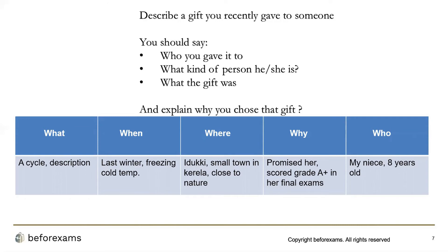Let's see what notes we could make from this question. What was the gift I gave? — A cycle; a blue cycle. You can also add the make of the cycle and what was special about it. When did I gift it? — Last winter, when it was freezing cold. Where? — Eduki, a small town in Kerala, close to nature — my hometown — and you can elaborate on that.